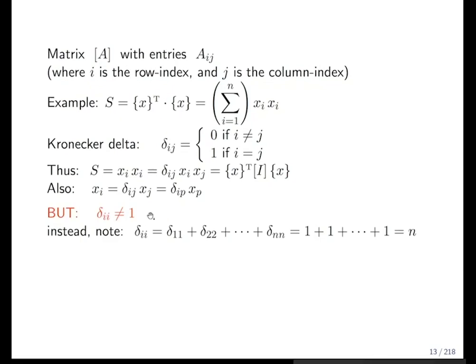And something to note, because that will occur in many of the calculations which we do: delta ii is not equal to one. Delta ii—what means ii? I want to sum over all these elements, so that's delta 11 plus delta 22, and so on, and that is n. In two dimensions, it's two; in three dimensions, it's three. So this is something you have to keep in mind for later calculations and for practice.